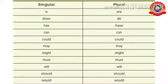Now go through the singular verbs: is, does, has, can, could, may, might, must, will, should, would. Plural forms are: are, do, have — then the rest are the same.